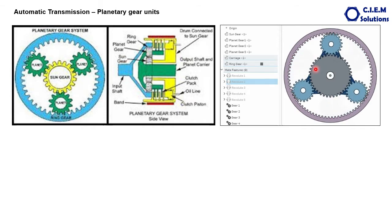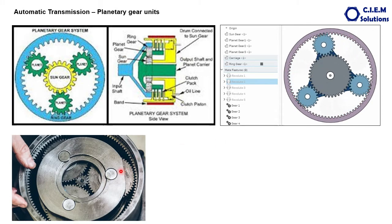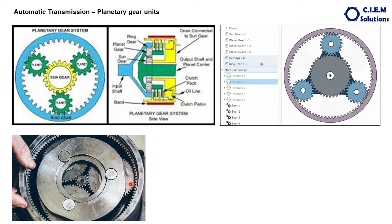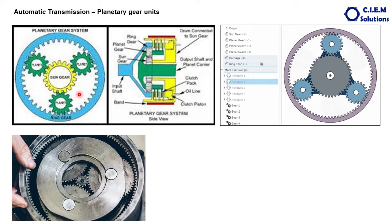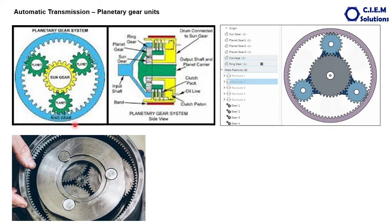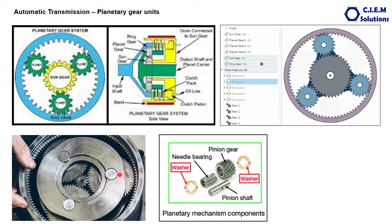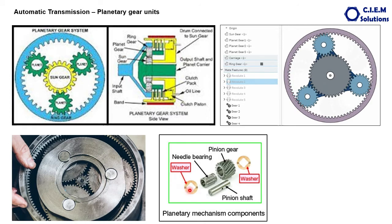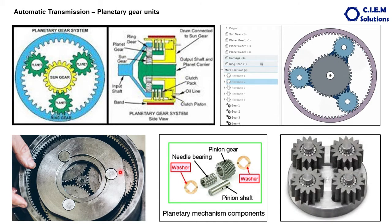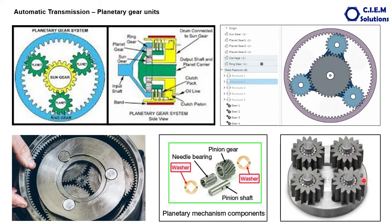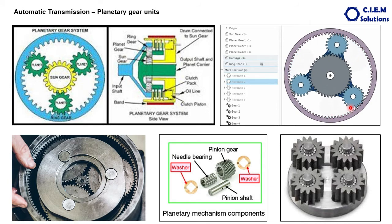Looking at a real photo of a planetary gear unit: this is the ring gear with internal teeth, these are the planetary pinions, this is the sun gear, and this is the case. The number of planetary pinions may vary depending on the design — in some systems it may be four gears, some six, some only two. When you dismantle the planetary pinion from the case, you can see the planetary pin, needle bearings, the planetary gear, and thrust washers to protect the gears from lateral movement.